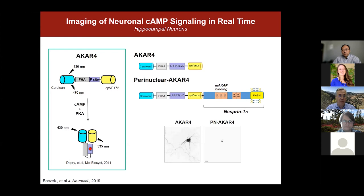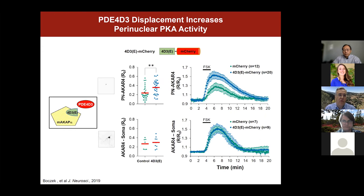We expressed AKAR-4 — developed by Jin Zhang in San Diego — either solubly throughout neurons or fused to Nesprin-1-alpha, which localizes AKAR-4 directly to the nuclear envelope. Consistent with the pivotal role of the phosphodiesterase at the signalsome in regulating cyclic AMP, we were able to show using these sensors that we can specifically regulate cyclic AMP at these complexes.